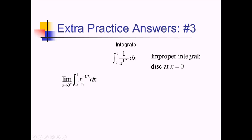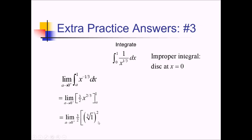Taking the antiderivative, I'm going to bump this up to a 2 thirds power, so I'm multiplying by 3 halves. So we have 3 halves x to the 2 thirds power, still with the limit as a approaches 0 from the right, evaluating from a to 1. Taking out that 3 halves, inside we have the cube root of 1 squared minus the cube root of a squared. As a approaches 0, this is just going to be 1, and the cube root of a squared is just going to be 0. So we end up with 3 halves.